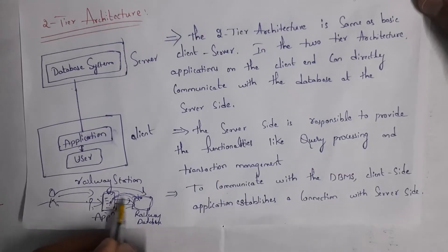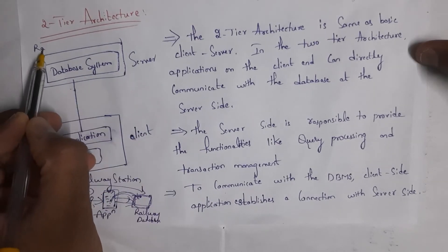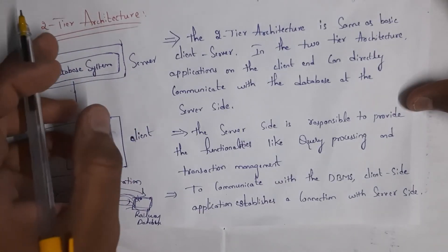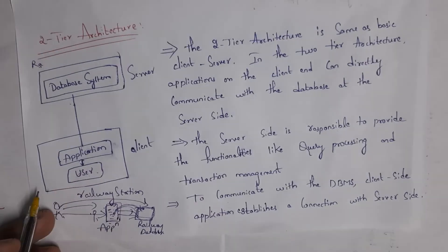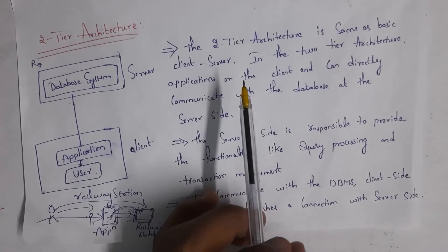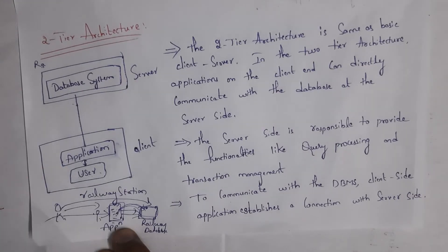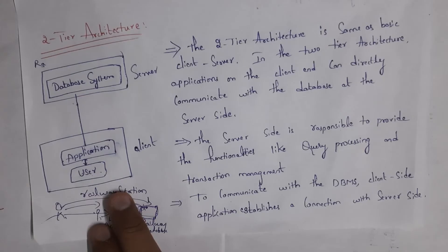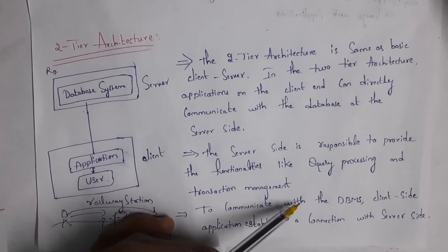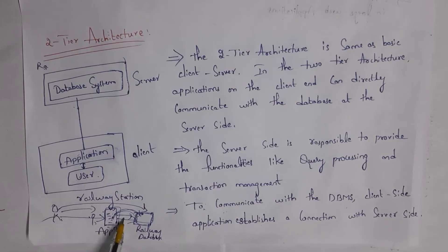This is the simple structure of two-tier architecture. The person is using a railway application to interact with the railway database. The user, by using the application, sends a request — so the user and application are considered the client, whereas the railway database provides the response, so the database software is considered the server. In two-tier architecture, not only a single user but multiple users can interact with the database. The two-tier architecture is the same as basic client-server architecture, where applications on the client side can directly communicate with the database on the server side. Purchasing a ticket at a railway station is a simple example of two-tier architecture.